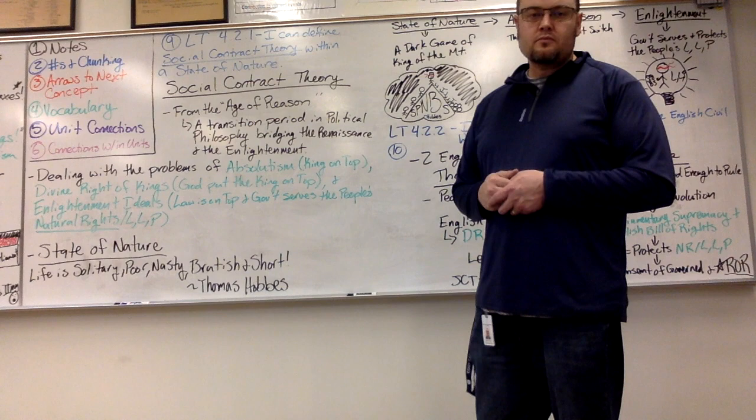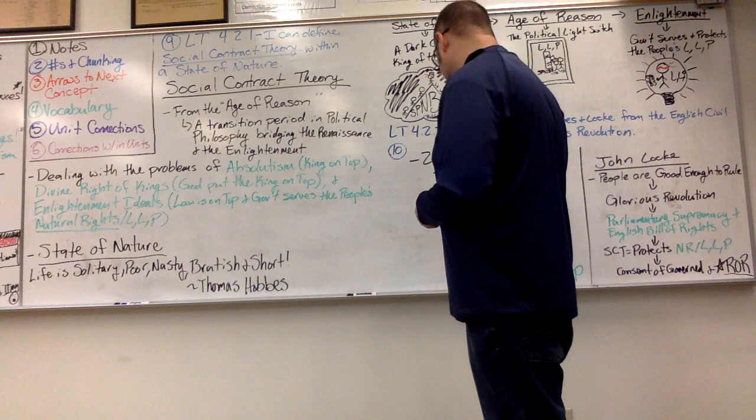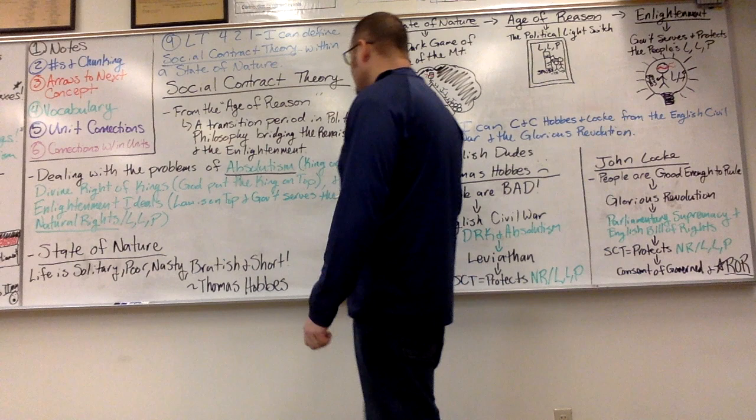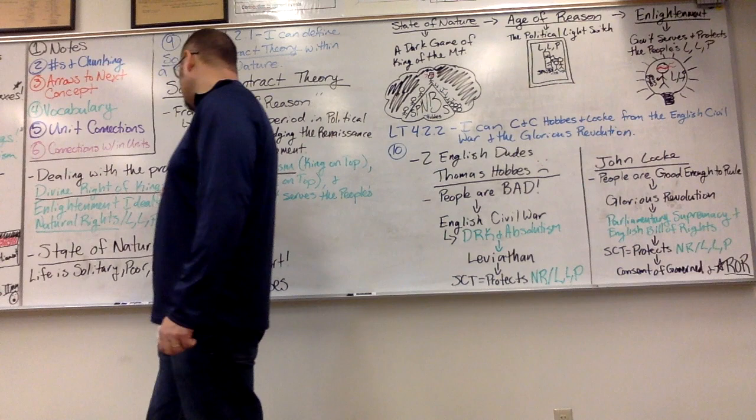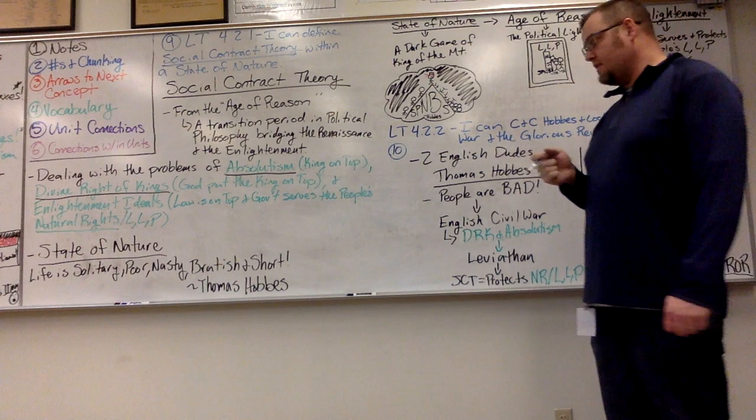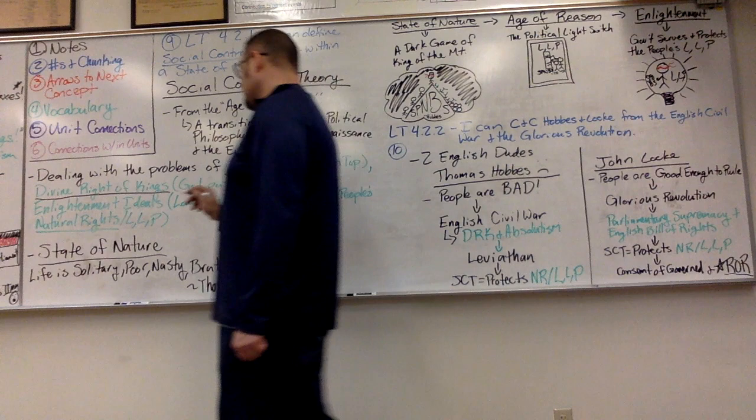It deals with a few different problems. One of the first ones is absolutism, that idea that the king is on top and always. The next part that goes hand-in-hand with absolutism is the divine right of kings, because God put the king on top. And then it's going to conflict with some of these Enlightenment ideals, which say that law is on top.